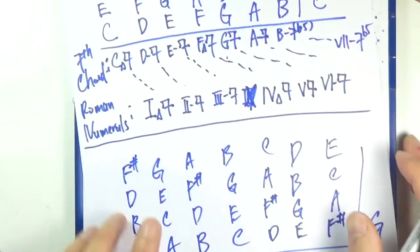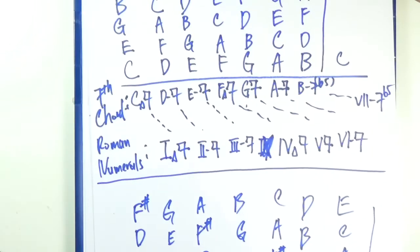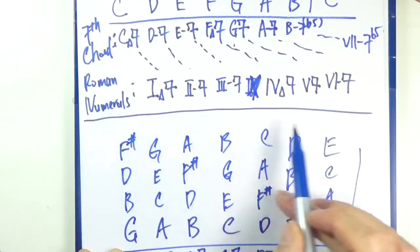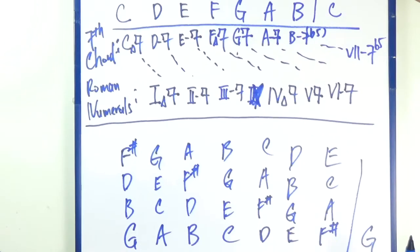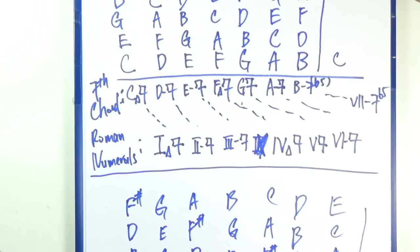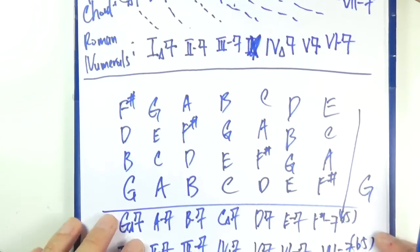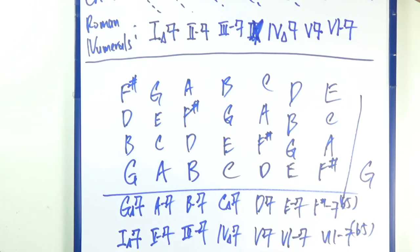So you have this formula that you can work with right now. That's how it would look like if you harmonize everything with seventh chords. That's it. I'll see you in the next video.